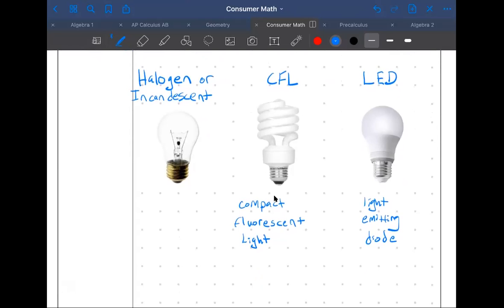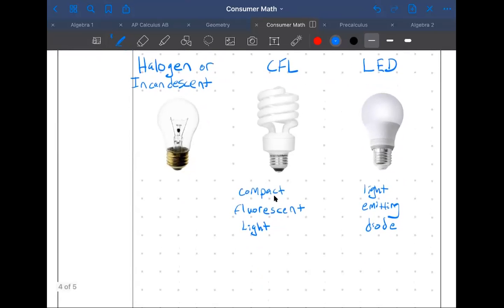Typically, these halogen or incandescents, they'll last for about 1200 hours, which sounds like a lot until you compare it to CFLs, which last for 8,000 hours. These are all averages, so it might be more or less. Then LEDs are crazy—they last for 25,000 hours. I'll point out also that these are not the only type of light bulbs you can get. There's a bunch of different other types of lights, but LEDs are just really, really nice.